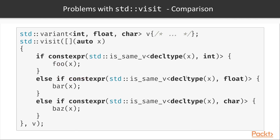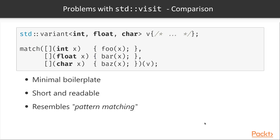If you want to use a generic lambda, you get the advantage of having the logic local to the visitation site, but there's even more boilerplate than before, and you need to use this kind of weird if constexpr chain that distracts you from the real action. If we instead use the match function we're going to implement in this section, you can see how the boilerplate is minimal, the result is short and readable, and how this function call resembles pattern matching.